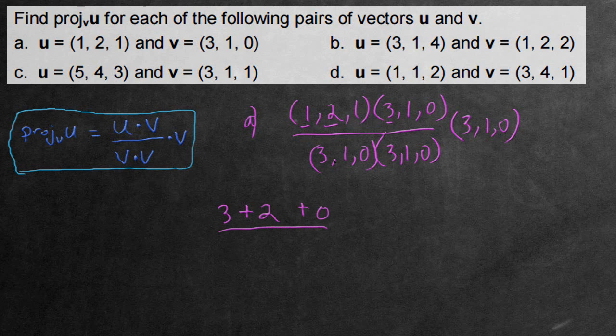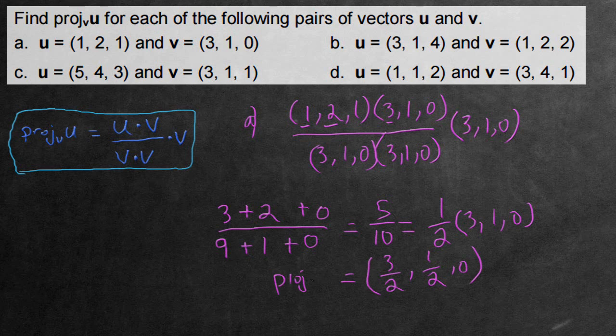All of this divided by what's down here. So 3 times 3 is 9, add 1 times 1 which is 1, and the rest is just 0. So adding this up, we have 5 over 10, or just 1 over 2. And this is going to be multiplying the (3, 1, 0). So let's multiply this through. We distribute this throughout all the main components. So now we have (3/2, 1/2, 0). And here is the vector, the projection of u along v for these two vectors for question A.